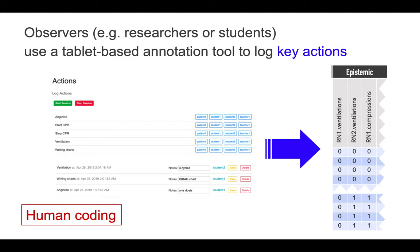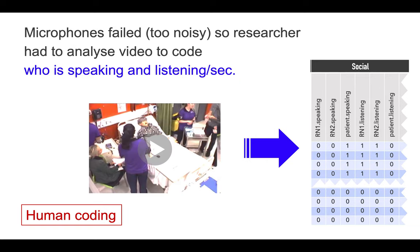We have human observers engaged in human coding with a tablet, watching the activity and clicking a button when a student engages in a particular epistemic task — such as administering medicine or administering CPR. Those are the epistemic activities. For social activities, we had intended that microphones would pick up who was talking when, but the wards were so noisy that in the end we actually had to have a researcher do this from the video. So that was human-coded, and that populated the social columns.